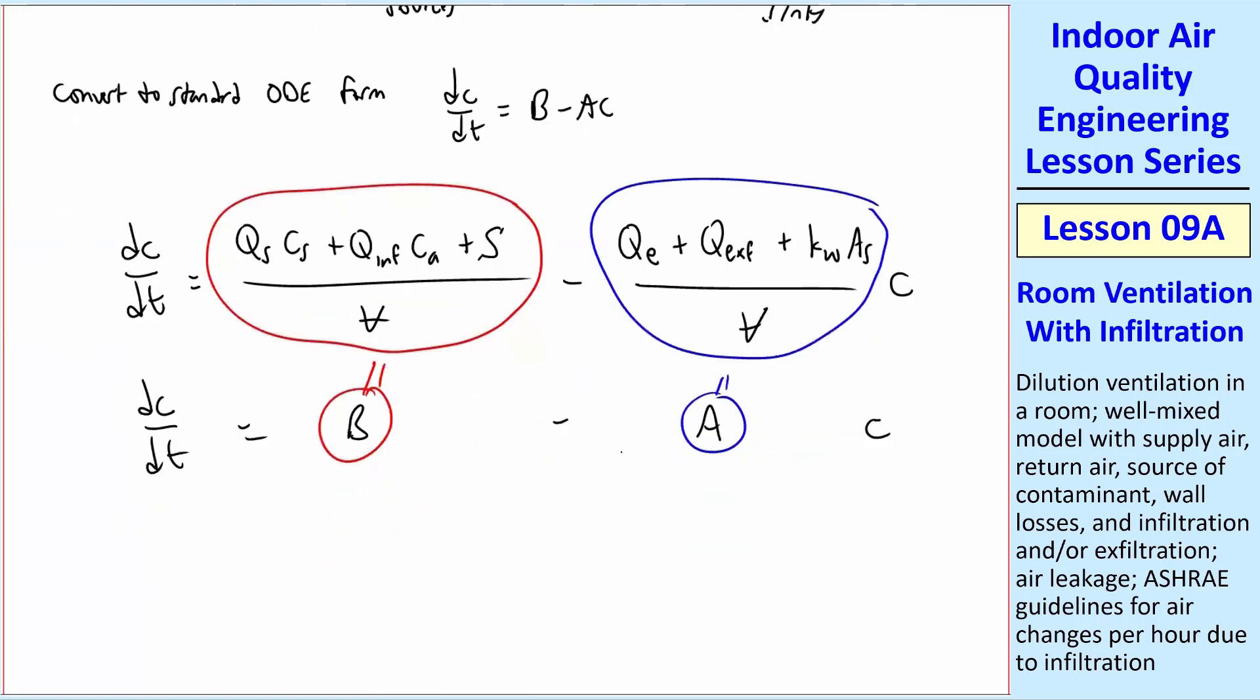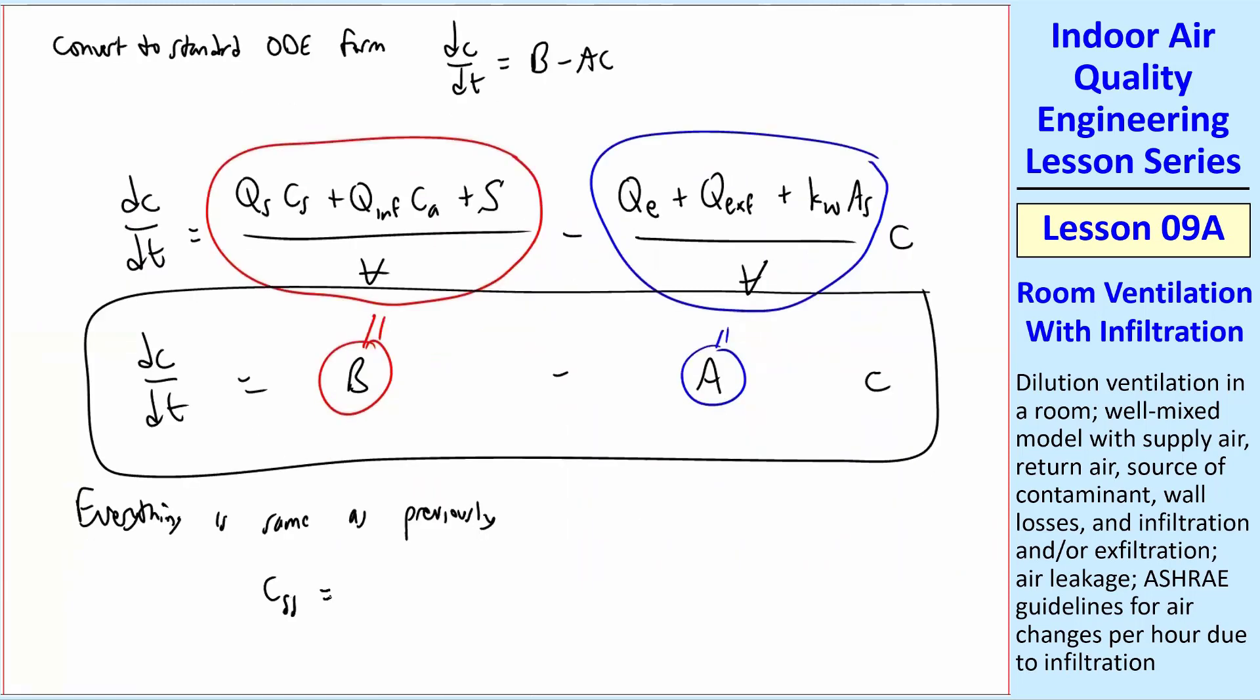And from here on, everything is the same as previously once you get your equation in this standard form. C_SS is B over A, for example, et cetera.